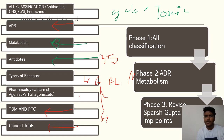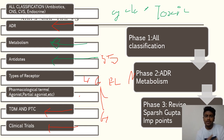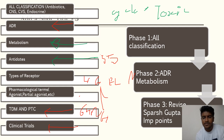Regarding TDM (therapeutic drug monitoring), know which drugs require it — those with a narrow therapeutic window or index, significant side effects, or prolonged adverse effects, such as antipsychotics and certain hypnotics. Also know the PTC (Pharmacy and Therapeutics Committee): its composition — the pharmacist is the chairman, the doctor is the secretary — and that it meets six times per year.